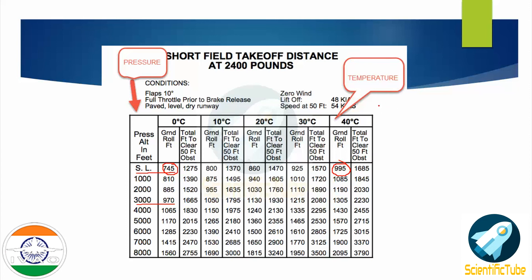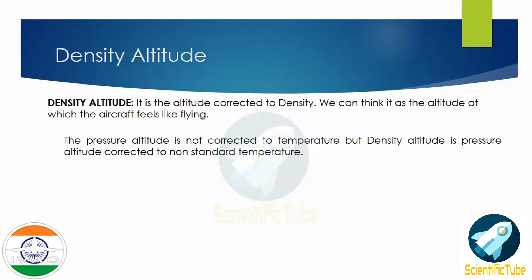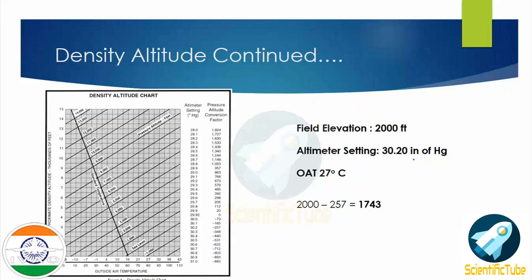Now let's look at density altitude. Density altitude is the altitude corrected for density. We can think of it as the altitude at which the aircraft feels like it's flying. The pressure altitude is not corrected for temperature, but density altitude is the pressure altitude corrected to non-standard temperature.